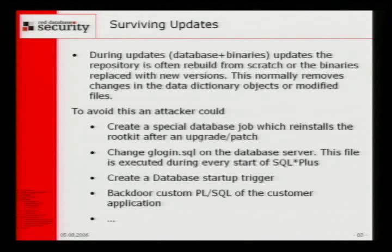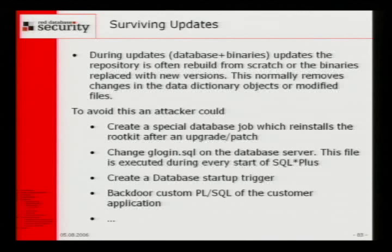One of the big problems is surviving updates. What happens if you update the database dictionary or the binaries? Oracle rebuilds everything from scratch. To protect our rootkit we can create a special database job — I showed this already. Or we can modify the glogin.sql, which is an auto startup file on the database server. If someone calls SQL*Plus on the database server, the entire content of this file is executed. Oracle also has a database startup trigger — this code is always executed when you start a database. Or instead of backdooring Oracle packages, we can backdoor custom packages, since quite often customers have their own application also written in PLSQL.